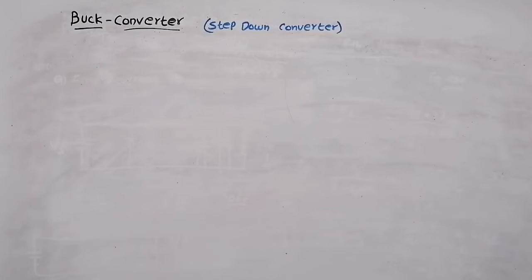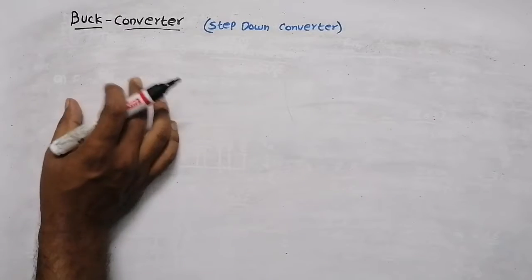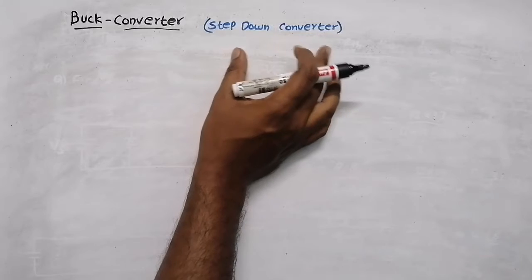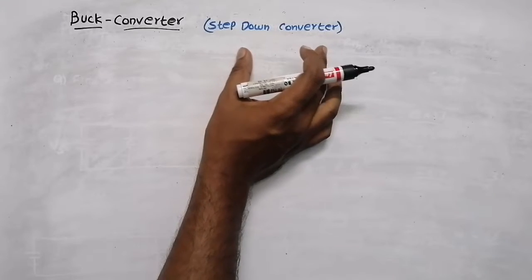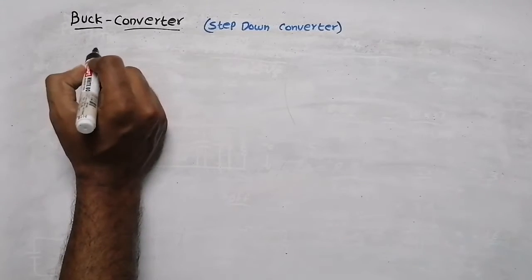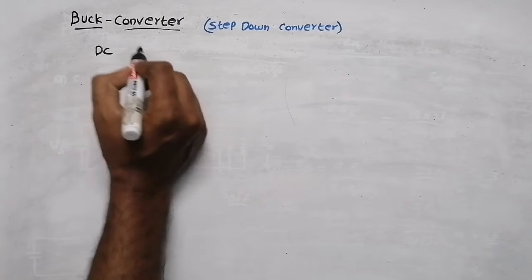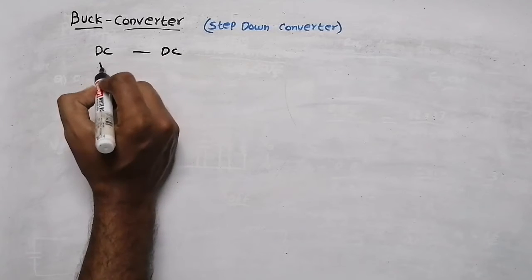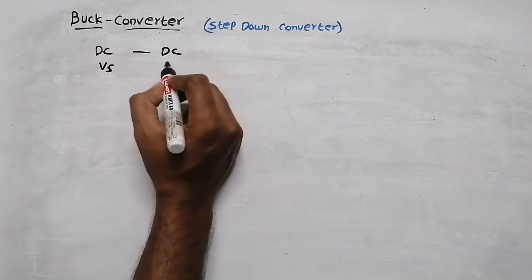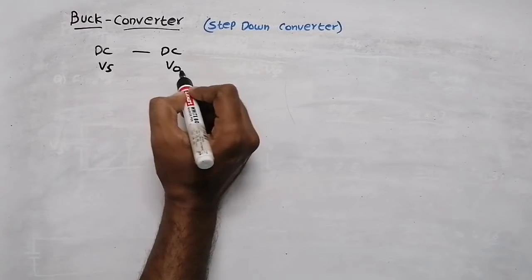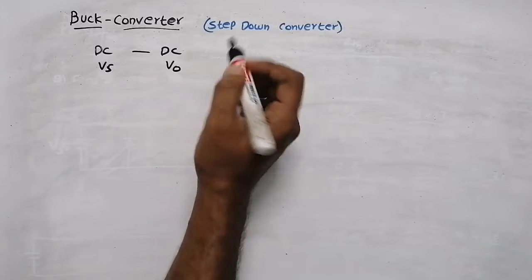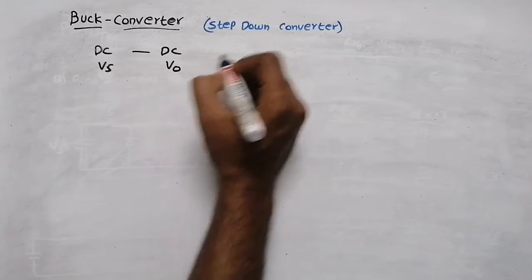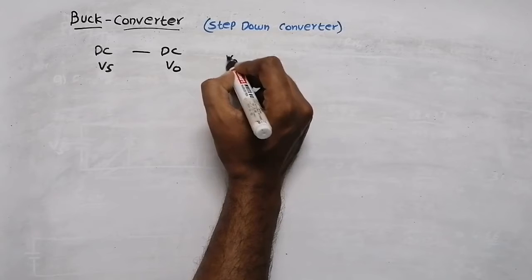In this video we are going to discuss about the Buck converter, which is also known as a step-down converter. A Buck converter will convert DC voltage into DC voltage — there will be a source voltage which is DC and we will get an output voltage which is also DC, but since it is a step-down converter, the output voltage will be less than the input voltage.